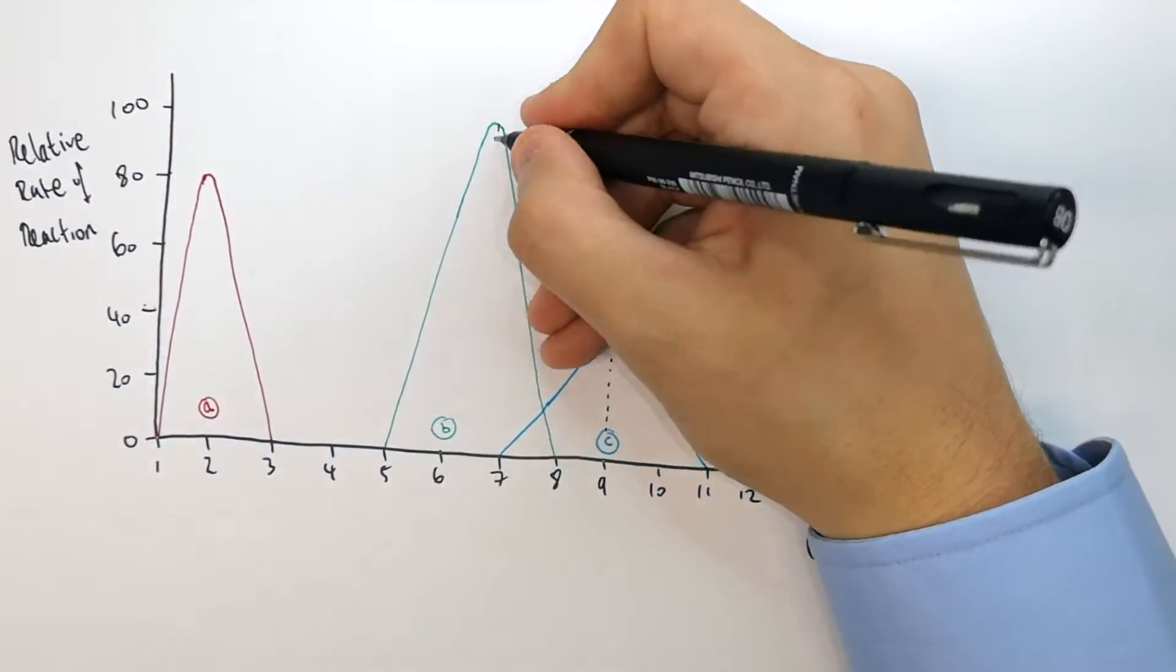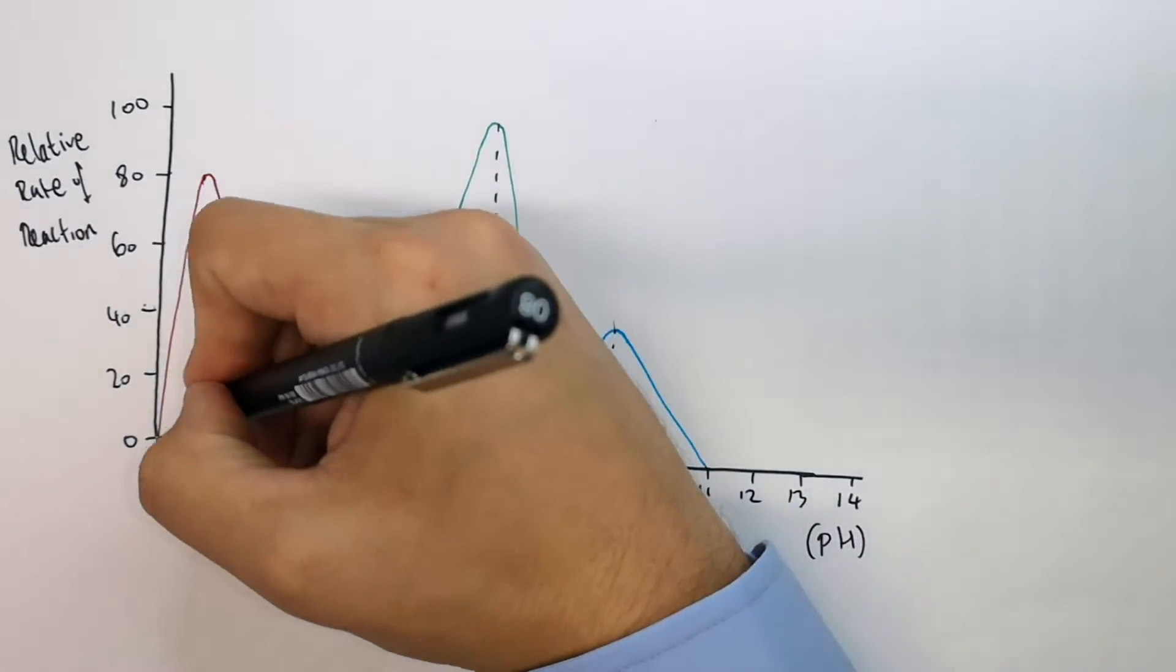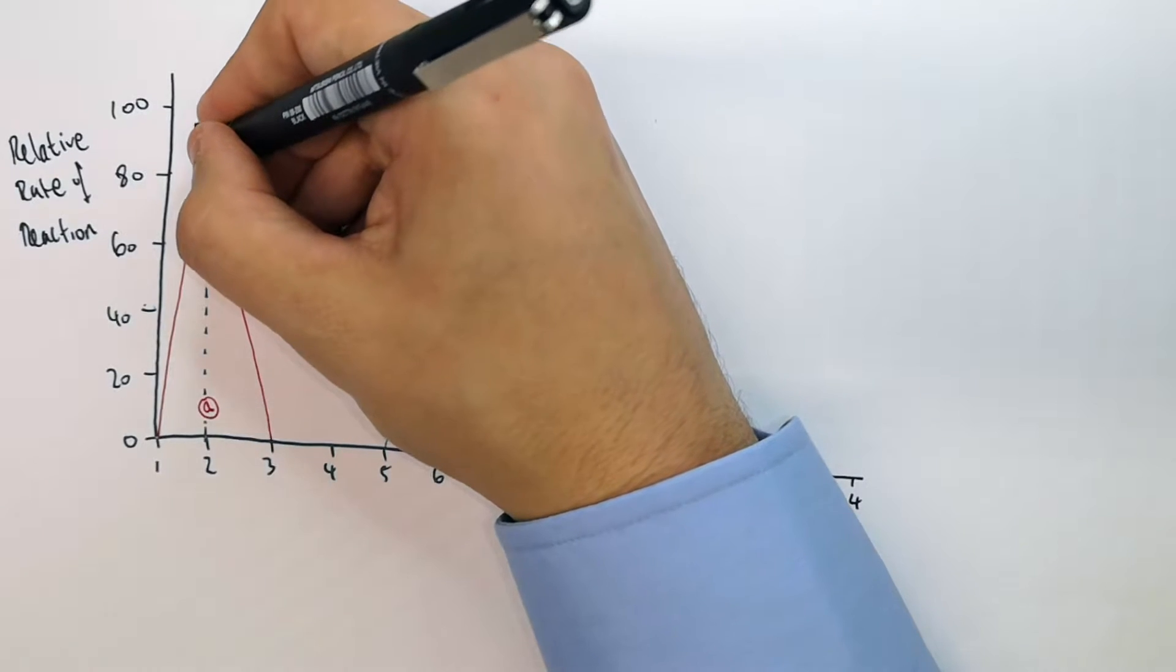You always mark on the optimum pH. So enzyme B likes neutral conditions and enzyme A likes acidic conditions.